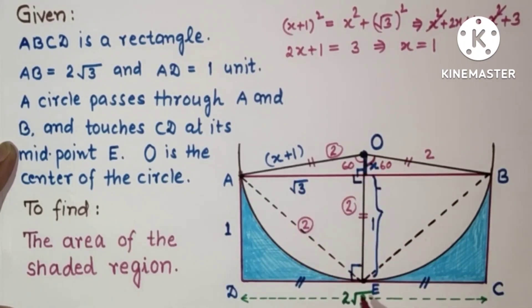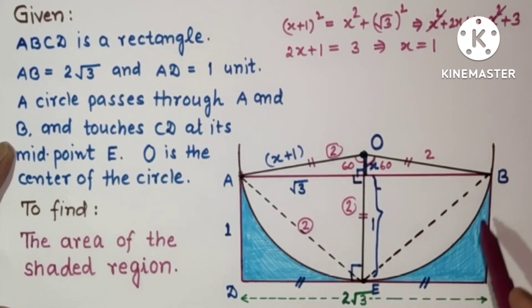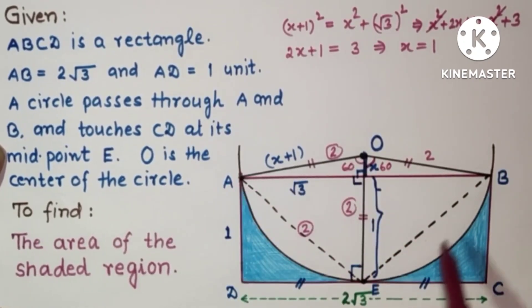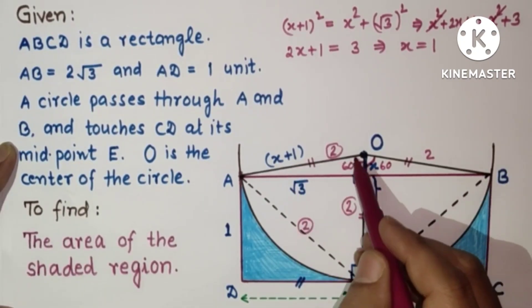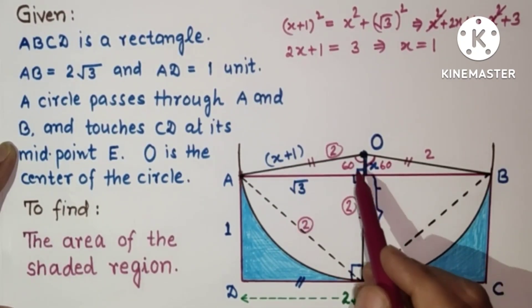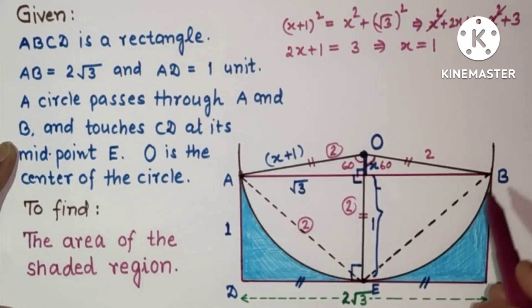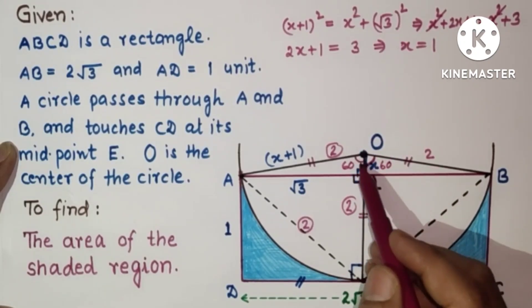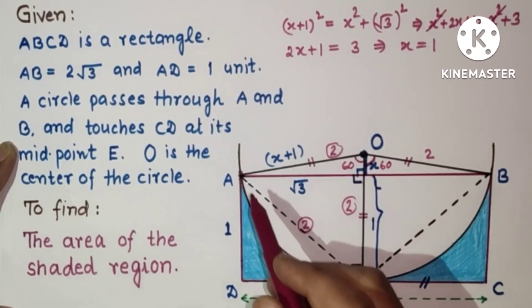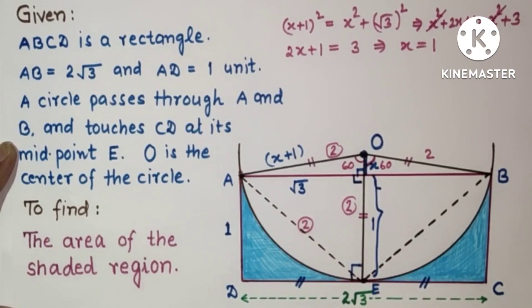The sector OAEB has a central angle of 120° (since angle AOB = 60° + 60° = 120°). Therefore, this sector is one-third of a full circle.